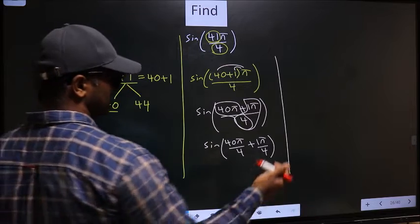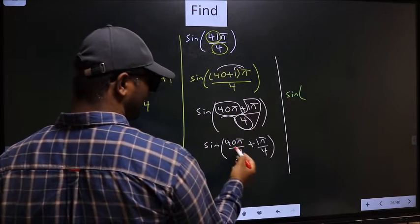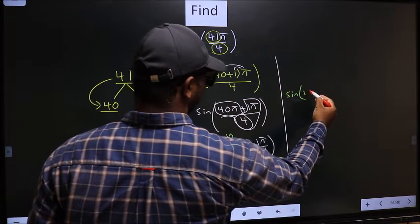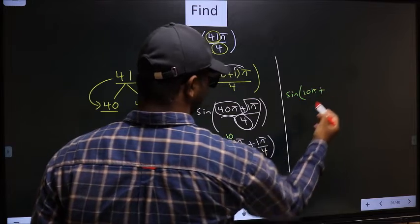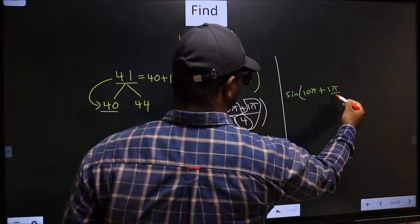Next, sin. Here you should cancel. 4 1s, 4 10s. So we get 10π plus here no change, 1π by 4.